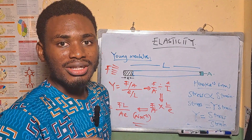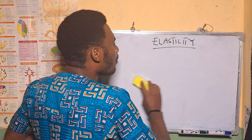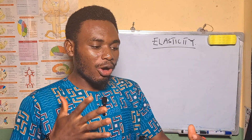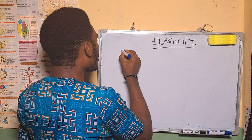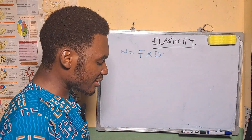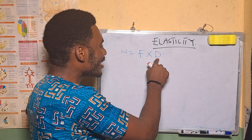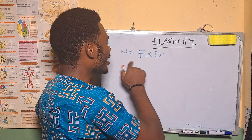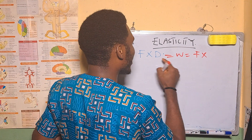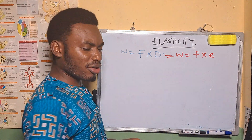Let's move to another sub-topic in elasticity: work done in elastic strings. Work is said to be done when a force moves an object a particular distance. Mathematically, work done equals force times distance (W = Fd). In elastic strings, the applied force causes the string to extend, so the distance is the extension E. Therefore, work done equals force multiplied by extension E.